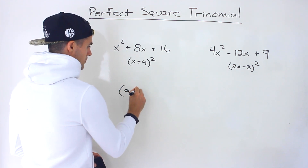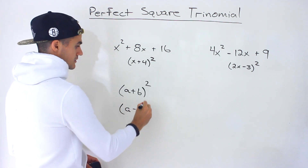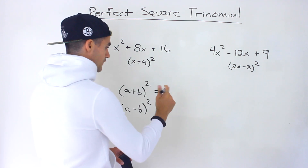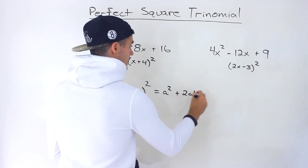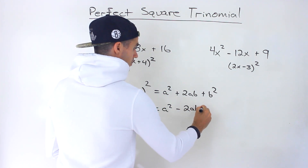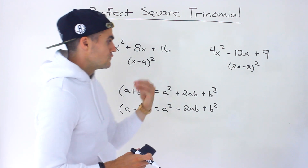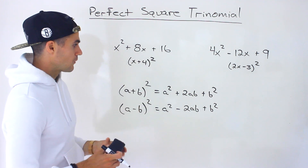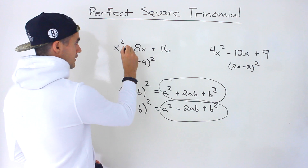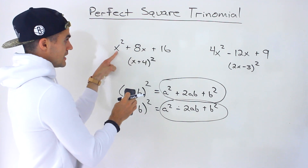In general, you may see a formula written as A plus B squared or A minus B squared. If you take A plus B times A plus B, foil it out and simplify like terms, you get A squared plus 2AB plus B squared. Many times you may get questions where they want you to verify that something is a perfect square trinomial using this formula, depending on whether the middle term is positive or negative.